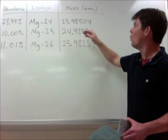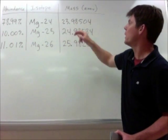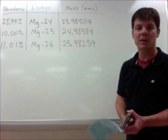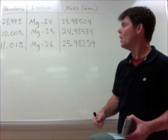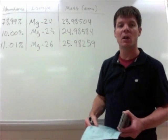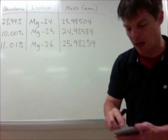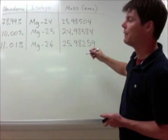So here's our strategy. We're going to take the actual mass for the different isotopes, 23.98504 for magnesium-24. We're going to multiply that by the decimal form of the abundance. So we need to change 78.99 to 0.7899, and we're going to multiply that by this value of 23.98504.